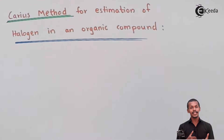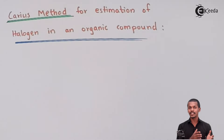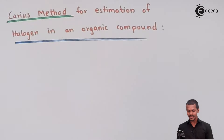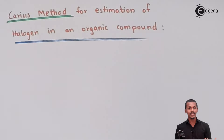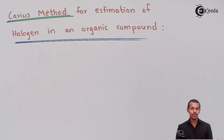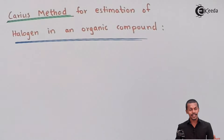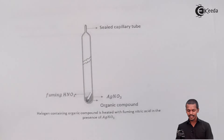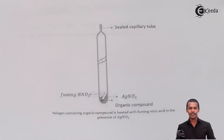Now we are going to discuss how we can determine the percentage — the determination of the halogen atom present in an organic compound. The method used to detect this is basically known as the Carius method, from which we can easily estimate what percentage of the halogen atom is present in the organic compound. Let me explain with the help of a diagram.